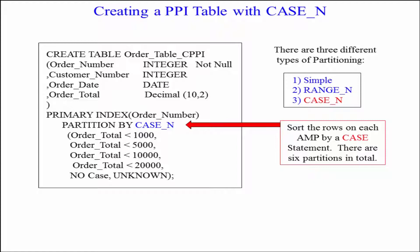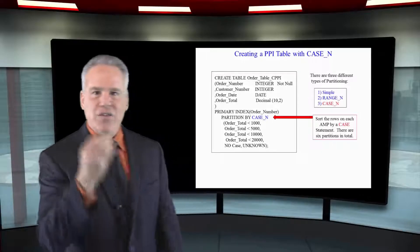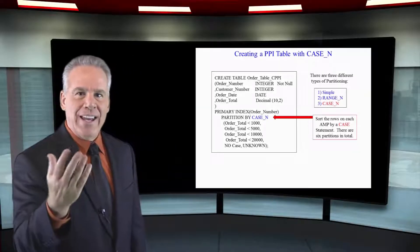In this case, we've got a CASE on the order total. Orders less than a thousand, they're going in partition one. Less than five thousand, they're going in partition two. And so on and so on.